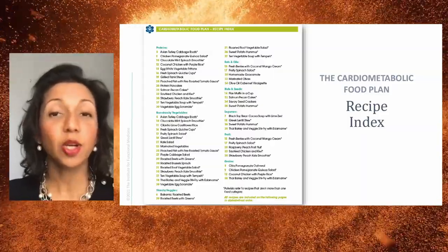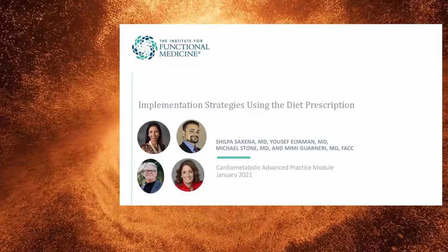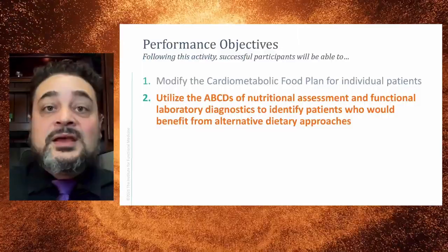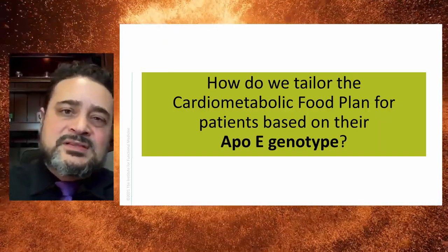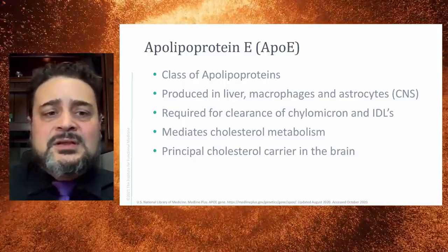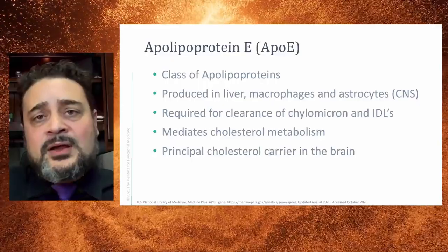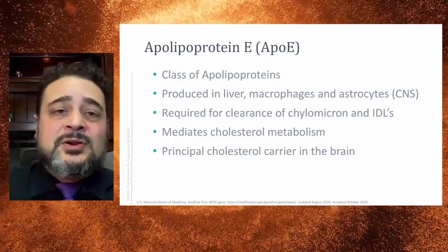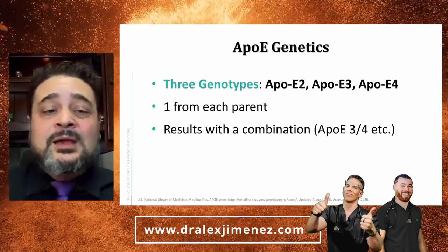Now Youssef is going to talk about how you can use genetics with the diet prescription. Thank you, Dr. Saxena, for that awesome talk on tailoring the cardiometabolic food plan. Today I'll be talking about how we tailor the cardiometabolic food plan in patients based on their APOE genotype—how do we customize it just a little bit further? APOE is a class of apolipoproteins produced in the liver, macrophages, and astrocytes. It is required for the clearance of chylomicrons and IDLs, it mediates cholesterol metabolism, and it is the principal cholesterol carrier in the brain.